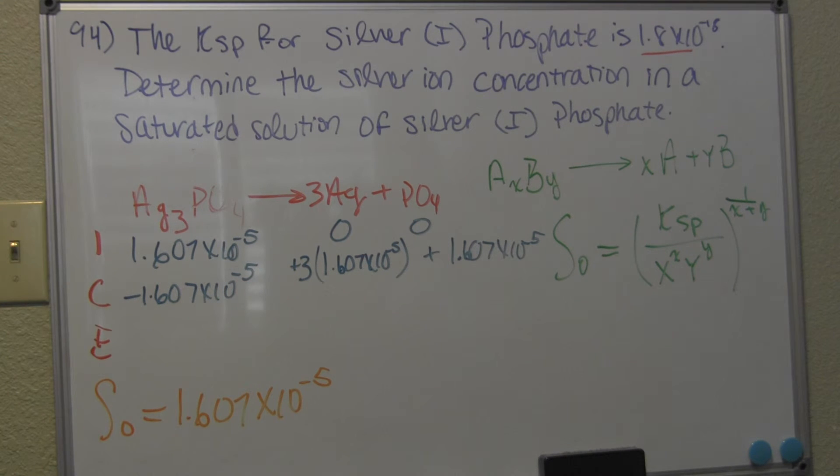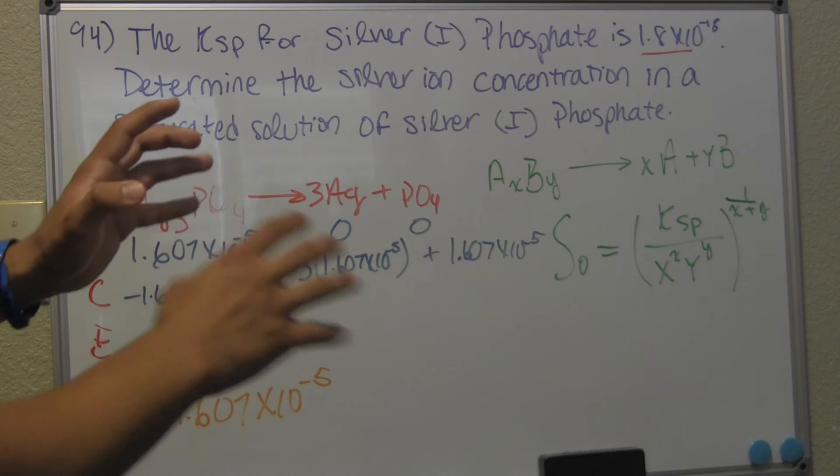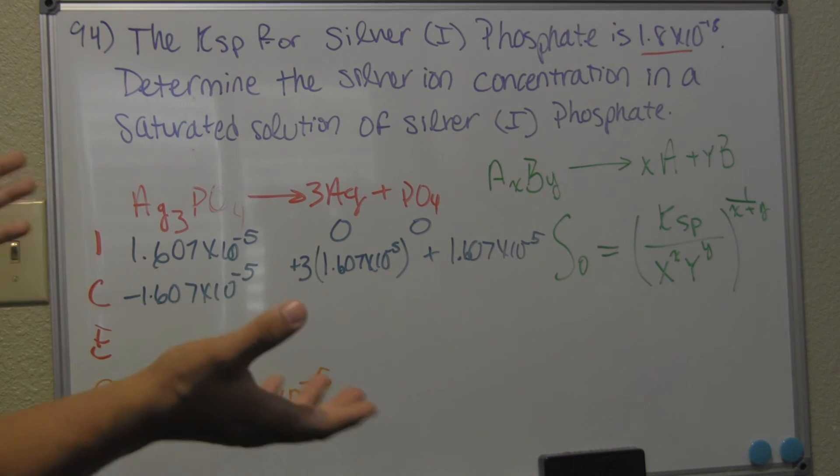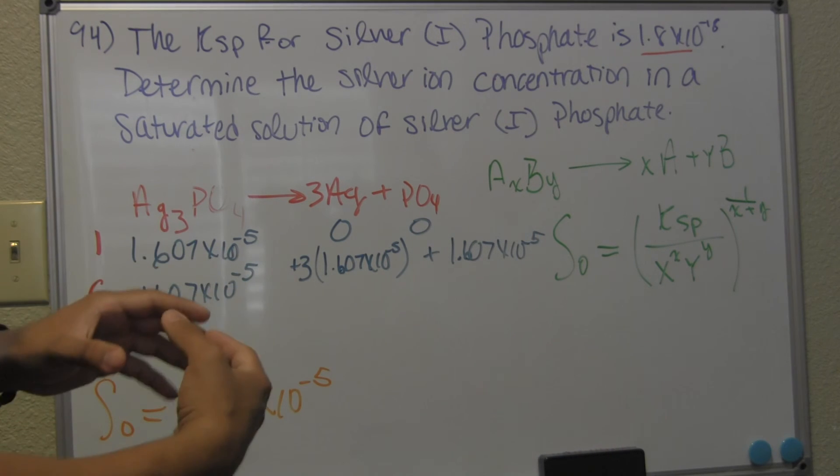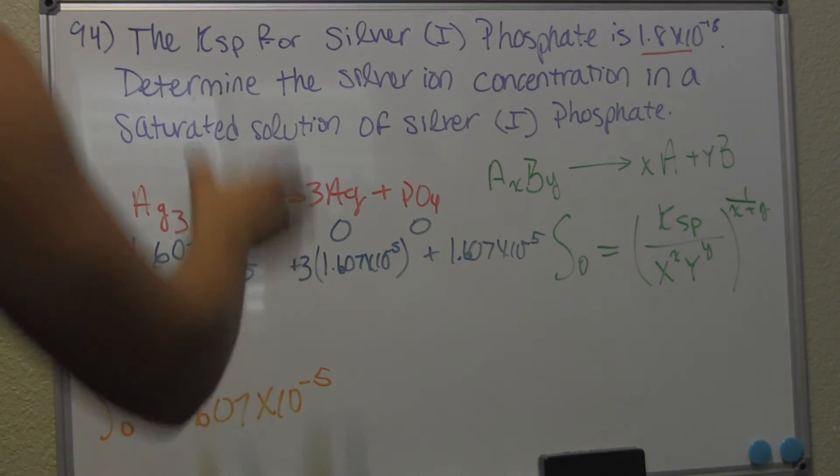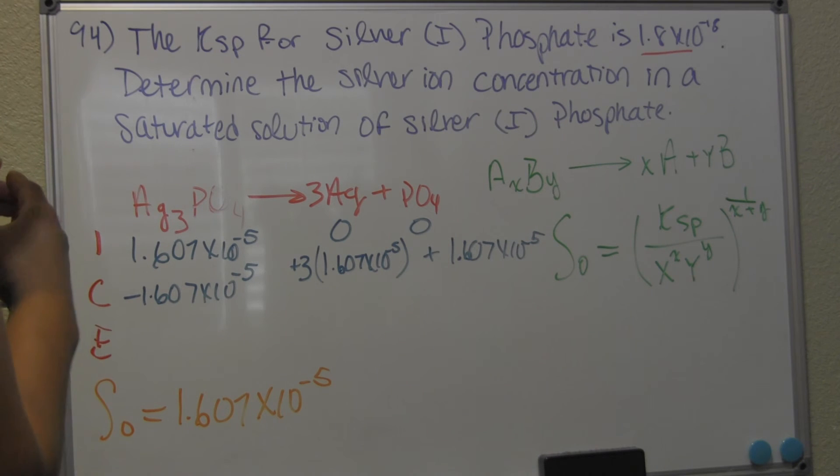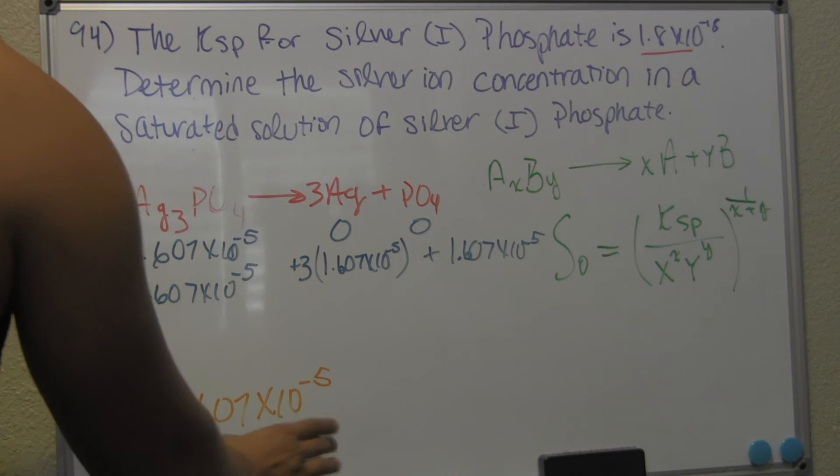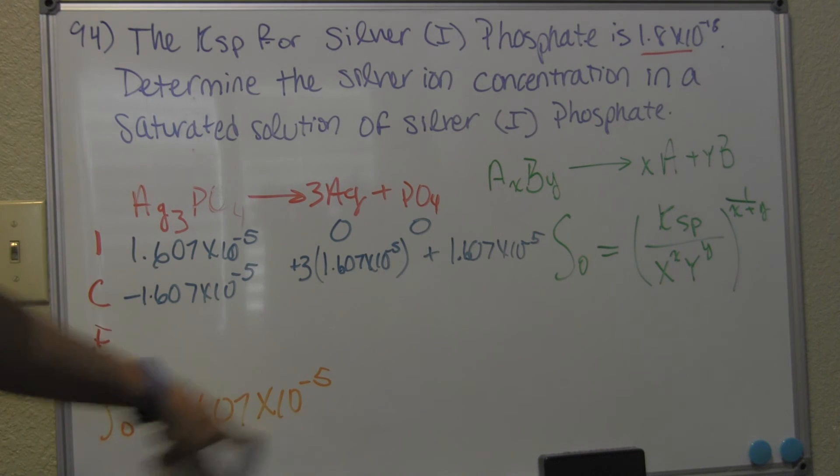It only completely dissociates here because we have molar solubility. And molar solubility is the portion, a smaller portion of a larger substance that's going to be dissolving. Silver (I) phosphate wants to stay intact. It's only a small portion of it is going to be dissolving, which is this portion right here.